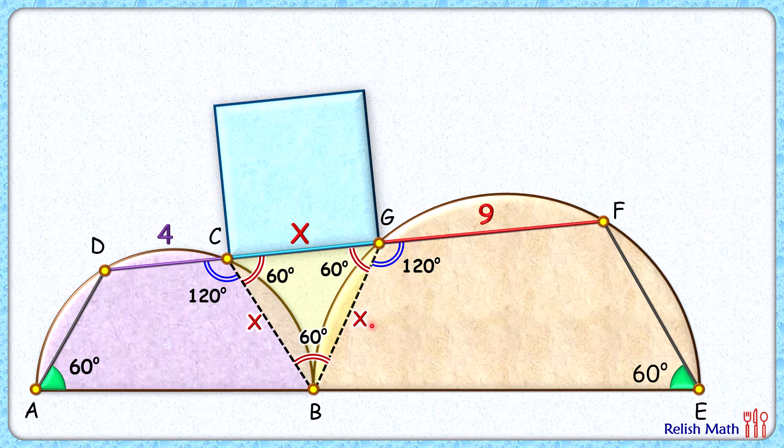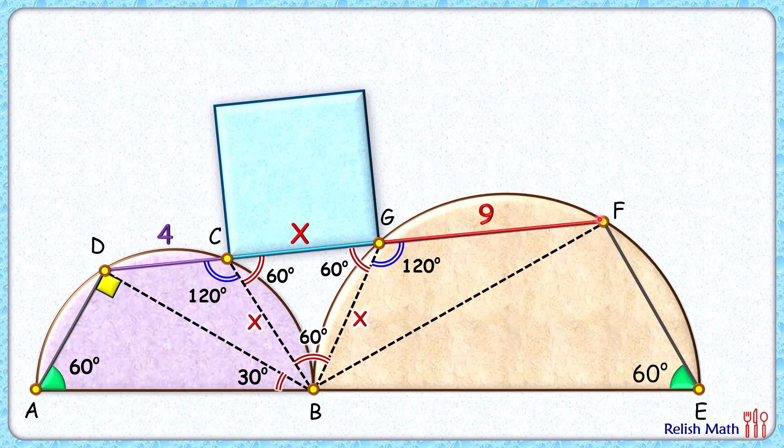Let's join DB here. Now AB is diameter, and diameter subtends an angle of 90 degrees, so this angle is 90. By angle sum property, this remaining angle will be 30 degrees. Same way, let's join BF here. BE is the diameter, so F will be 90 degrees, and this remaining angle here will be 30 degrees.